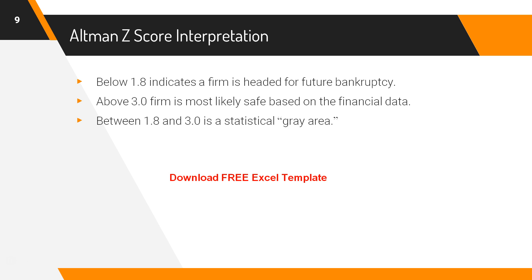You should keep in mind that this calculation doesn't work for new companies because their earnings are too low. The low earnings negatively affect most of the ratios used in Altman's Z-score, so new companies always tend to have a low Z-score. It is also important to note that Z-scores are not calculated for the purpose of estimating when a company will file bankruptcy, but rather help in measuring how closely a company resembles companies that have been insolvent.